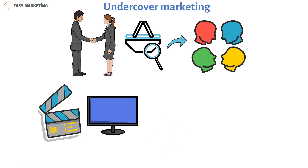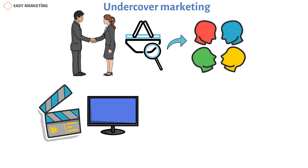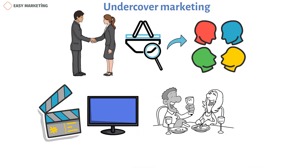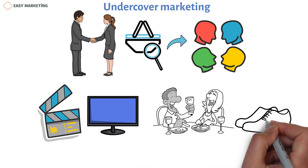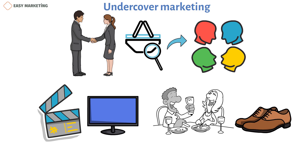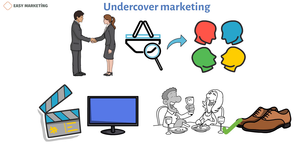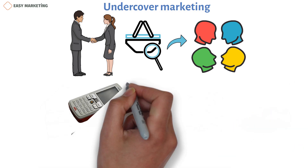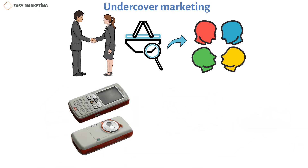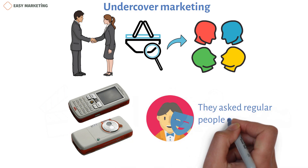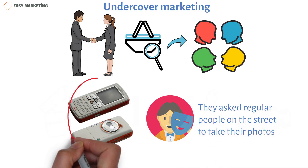You might have seen your favorite characters drinking a beverage from a specific brand or prone to wear shoes by a famous fashion house. Sometimes marketers get more creative with undercover marketing and come up with an unusual campaign, as Sony Ericsson did. The company hired actors who played tourists and asked regular people on the street to take their photos with Sony Ericsson mobile phones.